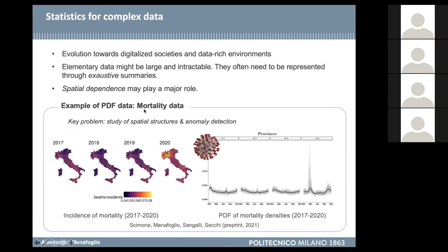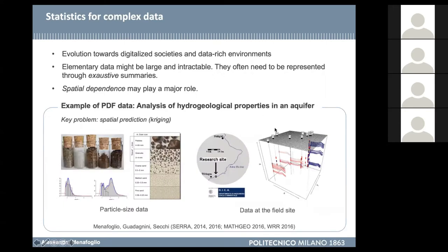On the same example as before, we have mortality data distributed in space. We cannot just forget about the distribution of the data in space, because this can provide very informative data on the context we are studying. We might be interested in studying not only the temporal dynamics of this data, but also the spatial structure that arose in 2020 that was not present in previous years. Other types of data collected in environmental settings include hydrological properties in aquifer systems.